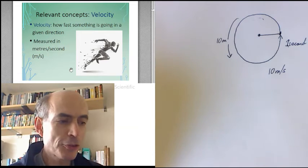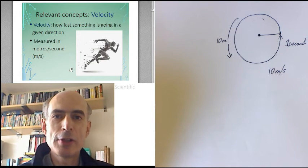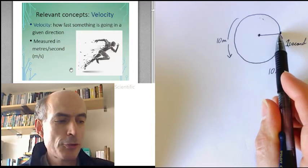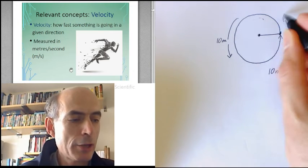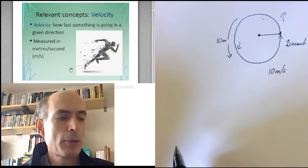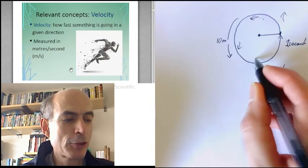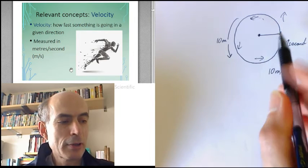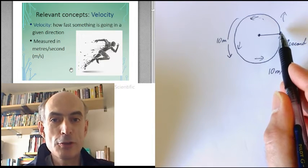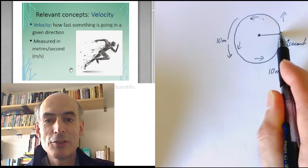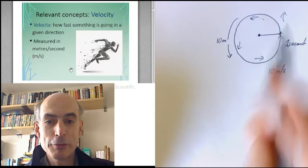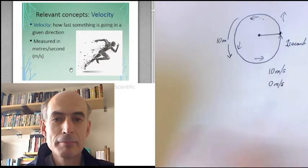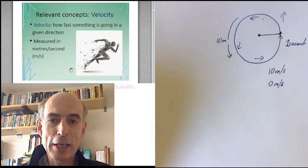In terms of the velocity, the answer is zero. Because it hasn't gone anywhere. It's spent the same amount of time going up as it has going down, the same amount of time going left as it has going right. So the total displacement, the total distance between where it started and where it's ended, is zero. And that makes the velocity zero.